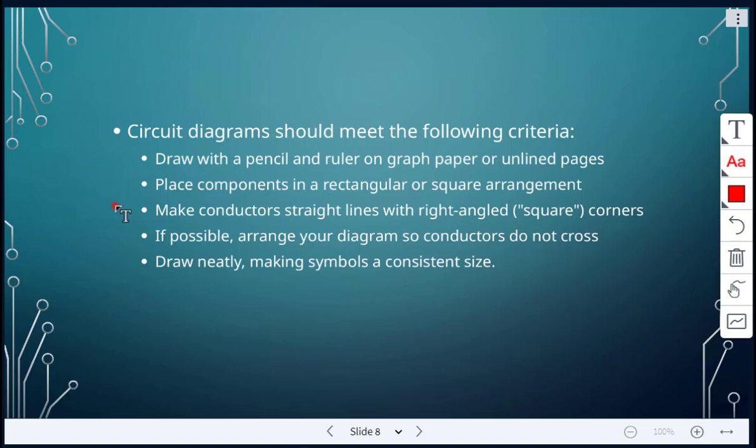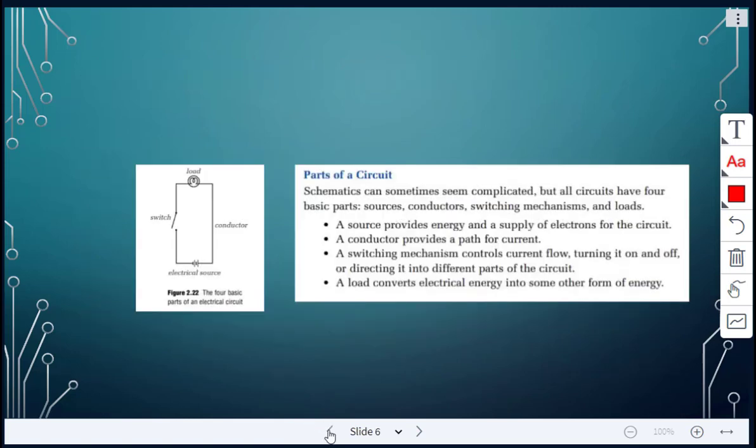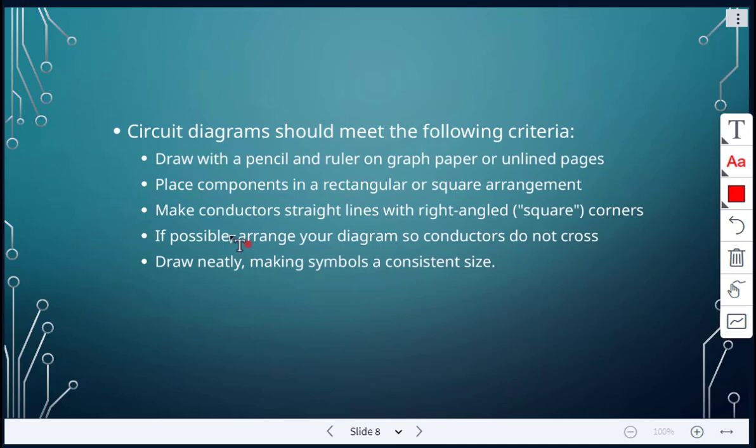The conductors, make sure you're using straight lines with right angled or square corners. So again, if we look at our conductors, which are our wiring, it's all shown as straight lines. And everything in the corners has right angles. Next, if possible, arrange your diagram so the conductors are not crossing. And then just make sure it's drawn neatly, making sure your symbols are a consistent size.